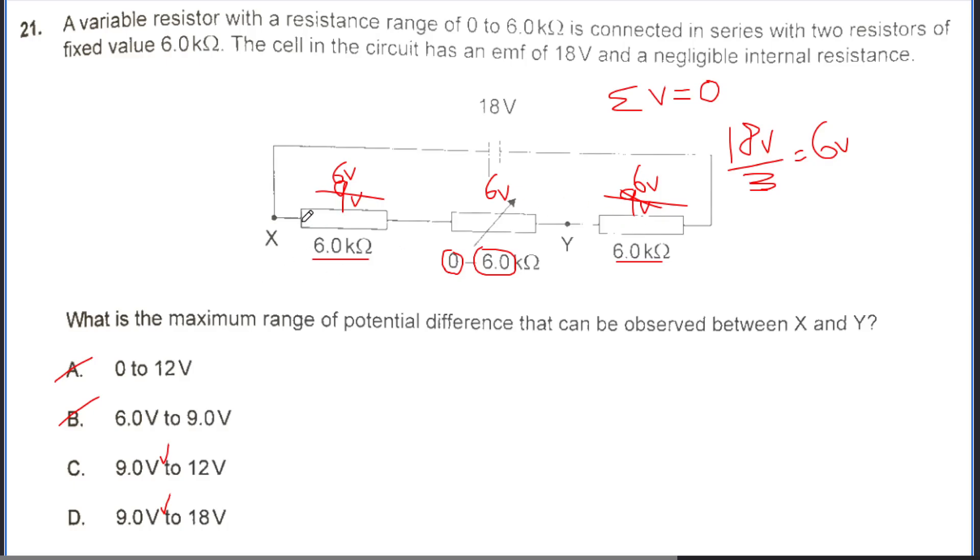But now it is asking between X and Y, and the total voltage between X and Y is 6 volts plus 6 volts, so it's 12 volts. So the answer is going to be C.